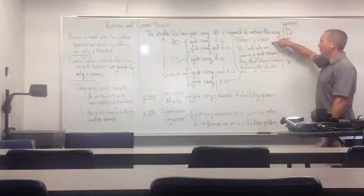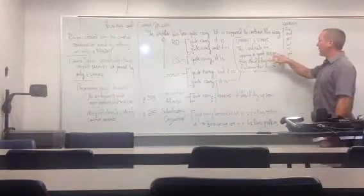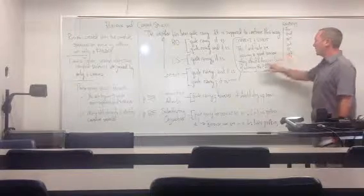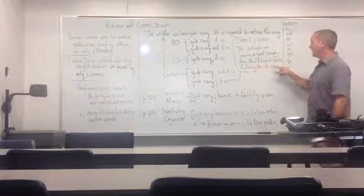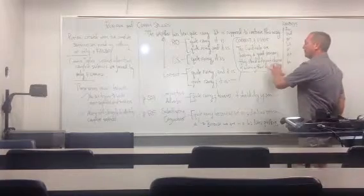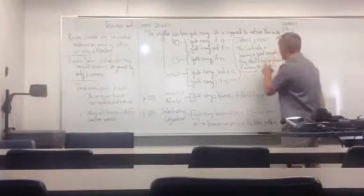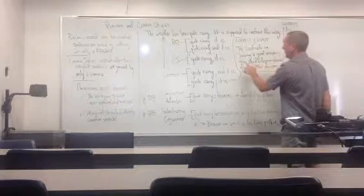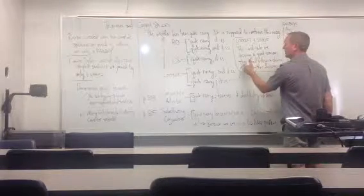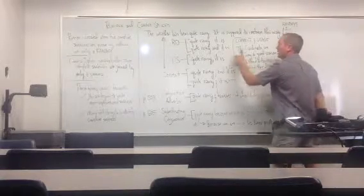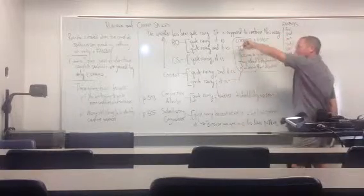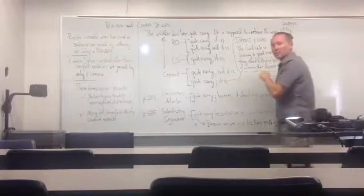Take this example over here. The cardinals are having a good season. Semicolon. They stand a decent chance of winning their division. So, both of those are complete sentences by themselves. That's the first important part. The second important part is that the subject of the second sentence, they, gives you more information about cardinals, the subject of the first sentence. Alright. Moving right along.